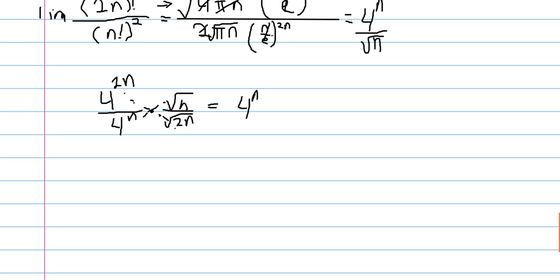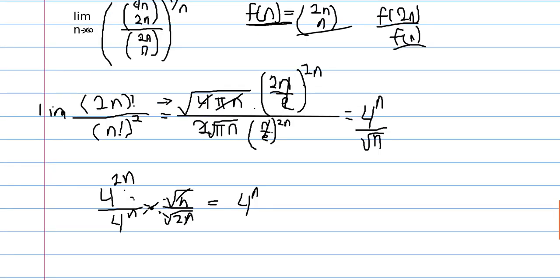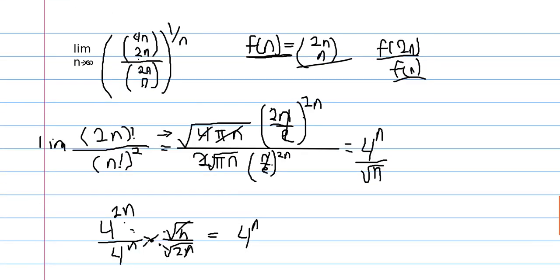And then our square root of 2 here, again it doesn't really matter, we're dealing with constants. And of course our square root of n's cancel out. So we're just left with 4 to the n, and that's what our inside expression is equal to.